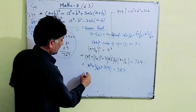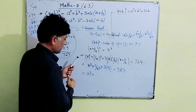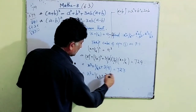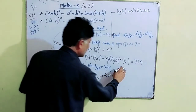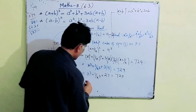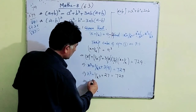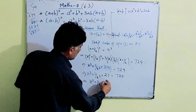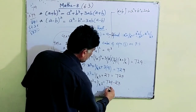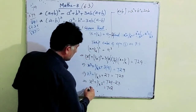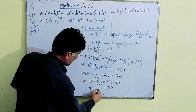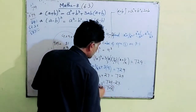So x³ + 1/x³ = 729 - 27 = 702. Therefore x³ + 1/x³ = 702. If the question were x - 1/x = 9, then you can find x³ - 1/x³ using the (a - b)³ formula, giving x³ - 1/x³ = 729 + 27 = 756.